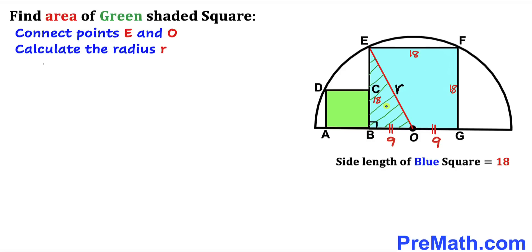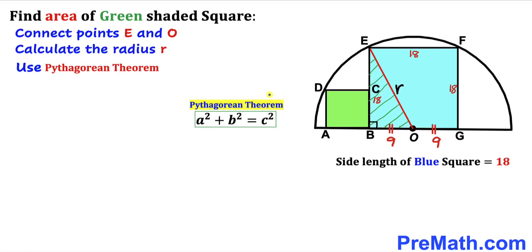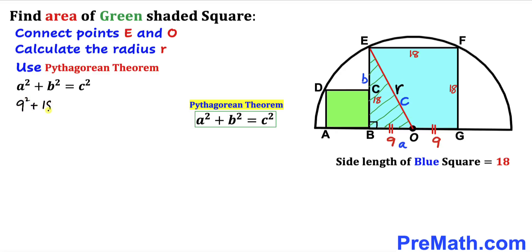Focusing on triangle EBO, this is a right triangle so we apply the Pythagorean theorem: a² + b² = c². In our case, a = 9, b = 18, and c = r. So we get 9² + 18² = r², which gives 81 + 324 = r², therefore r² = 405.